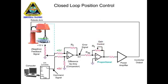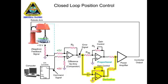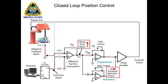To achieve a fast response time and minimize overshoot of the desired position, a derivative amplifier is added to the circuit. The derivative amplifier produces an output while the signal applied to the amplifier's input is changing. As the arm lags behind the command signal, the error signal generated causes the derivative amplifier to produce a voltage that adds to the output of the proportional amplifier.